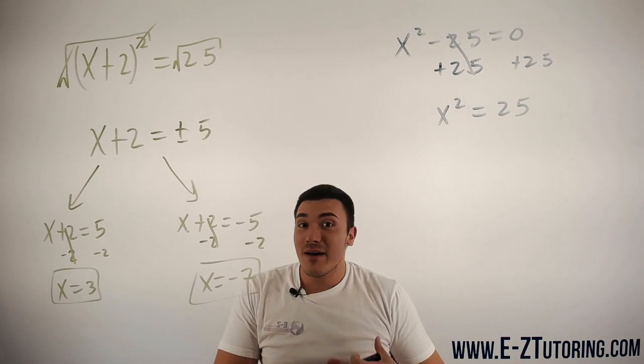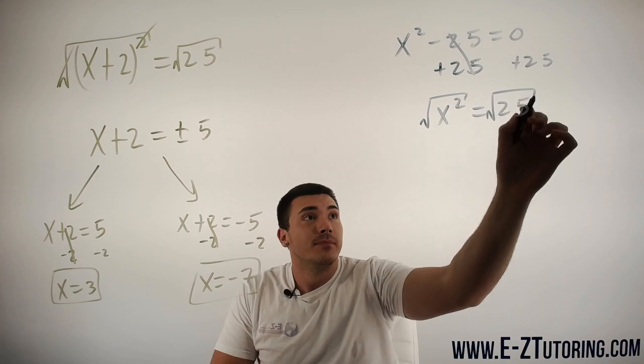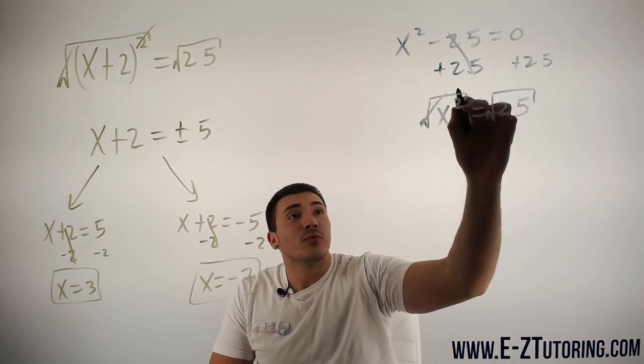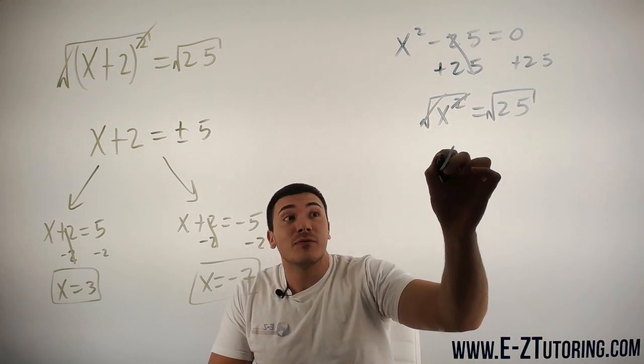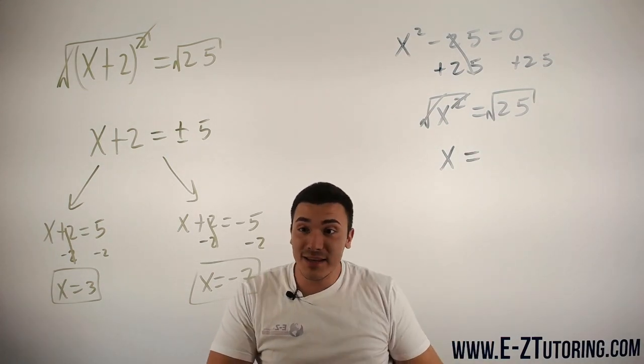And now when you have only the square, you can square root both sides, and now the square root will cancel out the square. We'll be left with just x, which is exactly what we want. We want to have x equals.